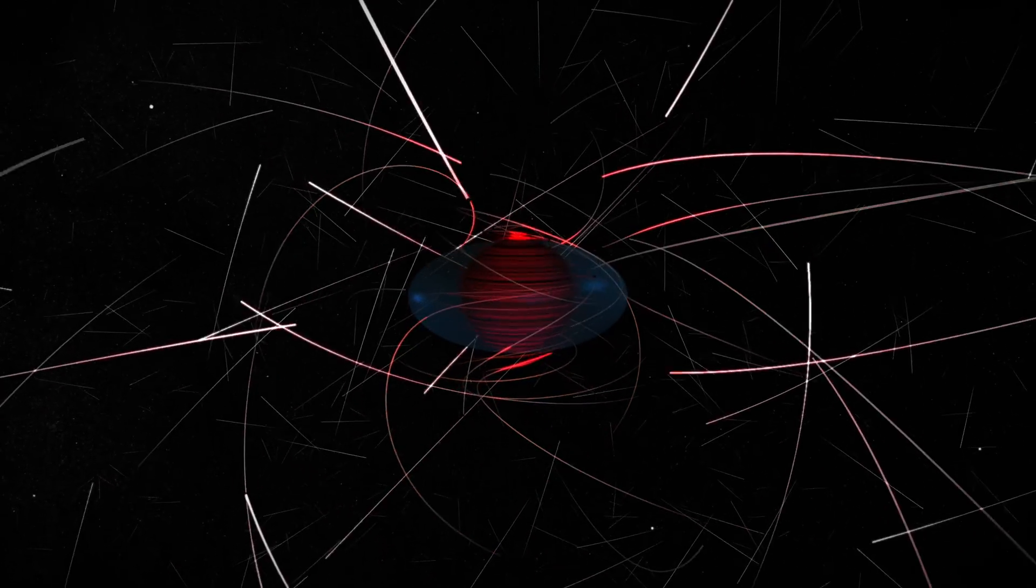The lightly shaded region farther out is the ergosphere, a zone where all particles are forced to move in the same direction as the black hole's spin.